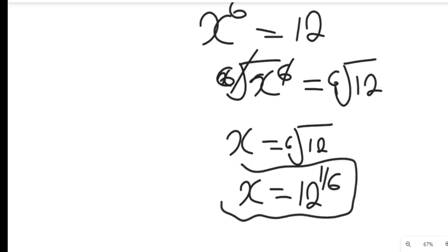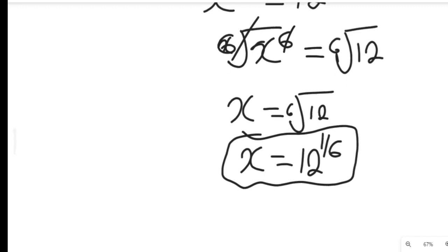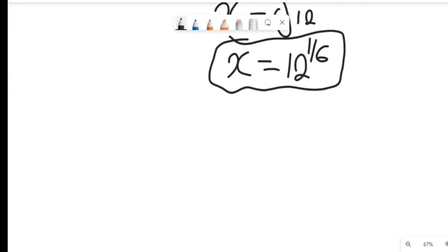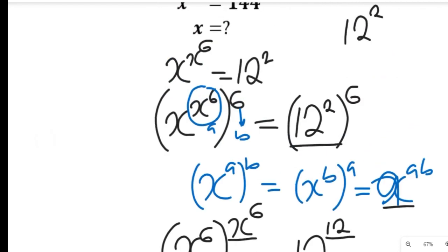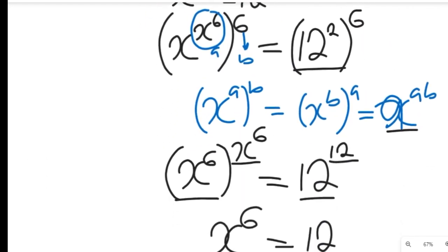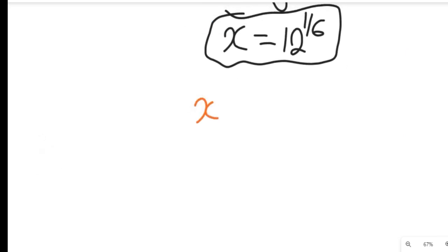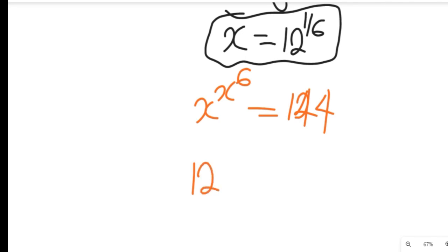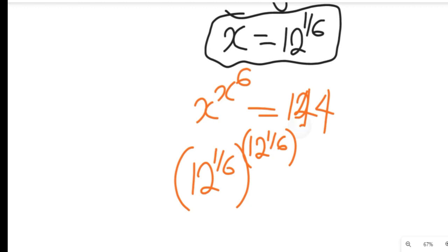This stands as the solution to that exponential equation. Now let's test whether the solution is absolutely correct. The question states that x to the power of x to the power of 6 must equal 144. So we insert x equals 12 to the power of 1/6: we have 12 to the power of 1/6, all to the power of 12 to the power of 1/6, all to the power of 6.